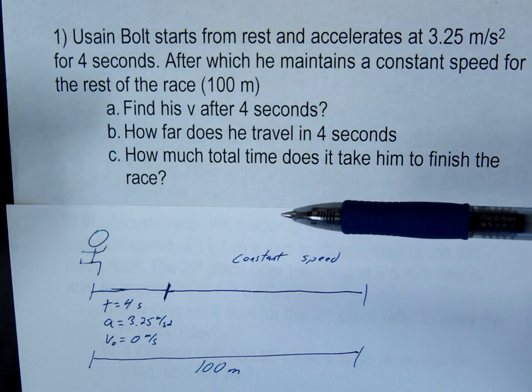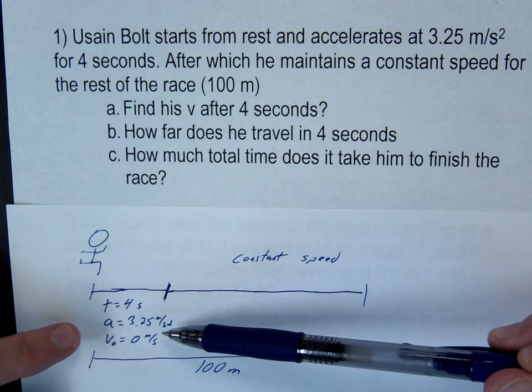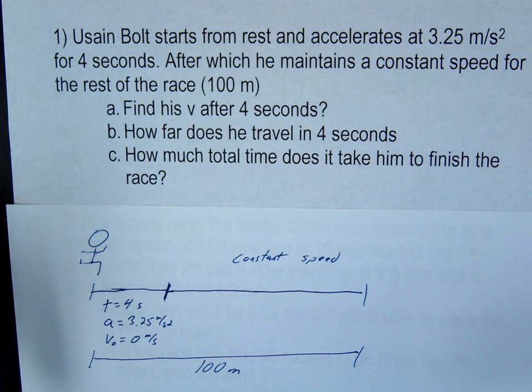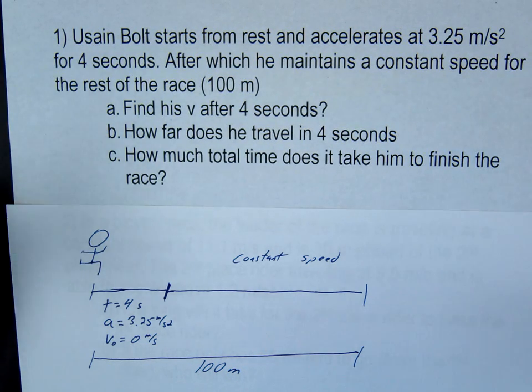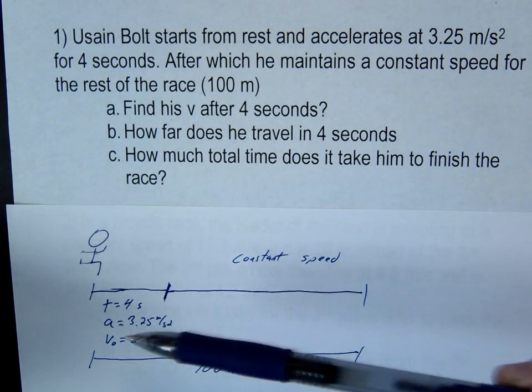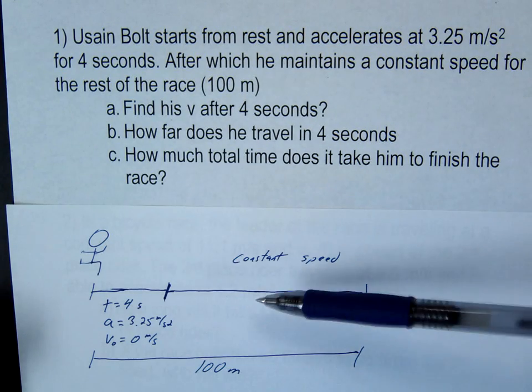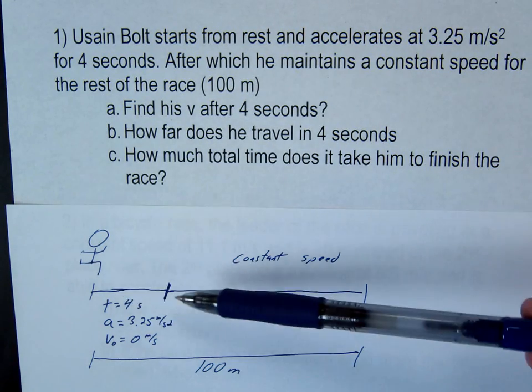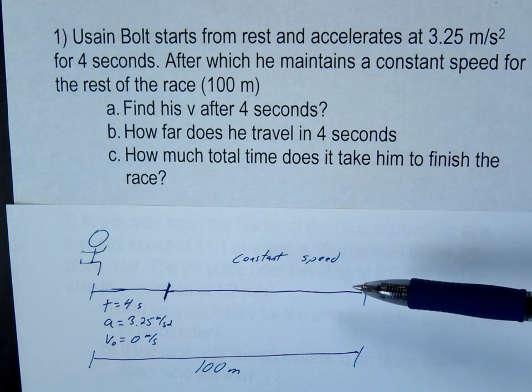A lot of people will try to say initial velocity is 0, acceleration is 3.25, distance is 100, and just solve for time. Why can we not do that? He doesn't continually accelerate for the whole trip. That would only be valid if he keeps getting faster the whole time. Because two different things are happening, you have to break it up into two steps: during acceleration, and then after when he's at constant speed.